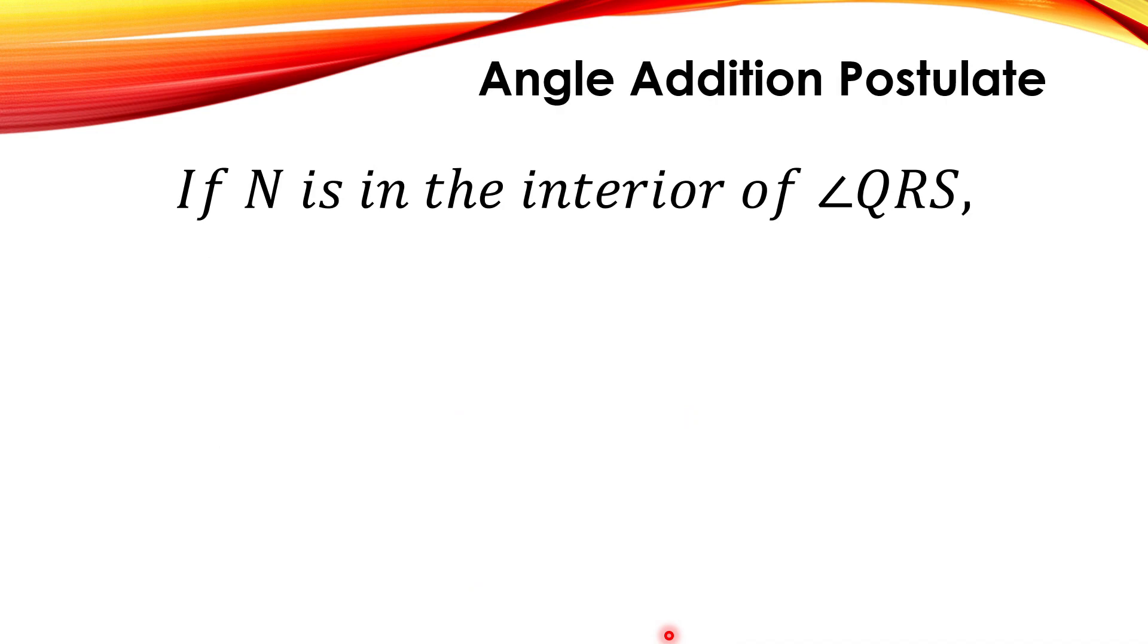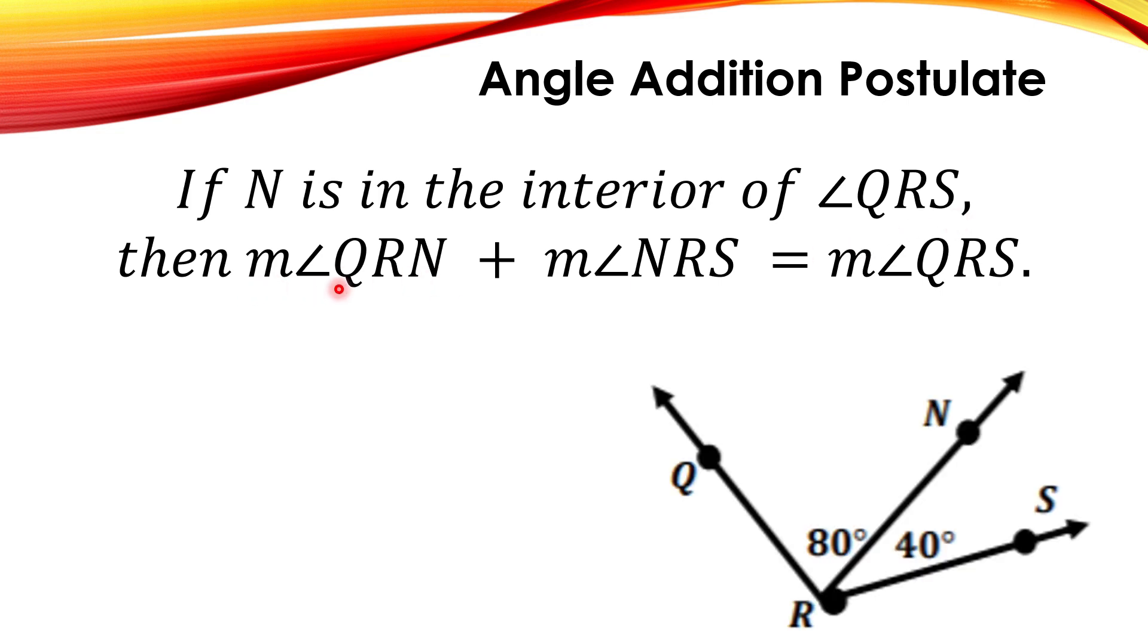Next is the angle addition postulate. If N is in the interior of angle QRS, then the measurement of angle QRN plus the measurement of angle NRS is equal to the measurement of angle QRS. This is an example. We have here the measurement of angle QRN is 80 and the measurement of angle NRS is 40. If we add 80 plus 40, that is 120 degrees.